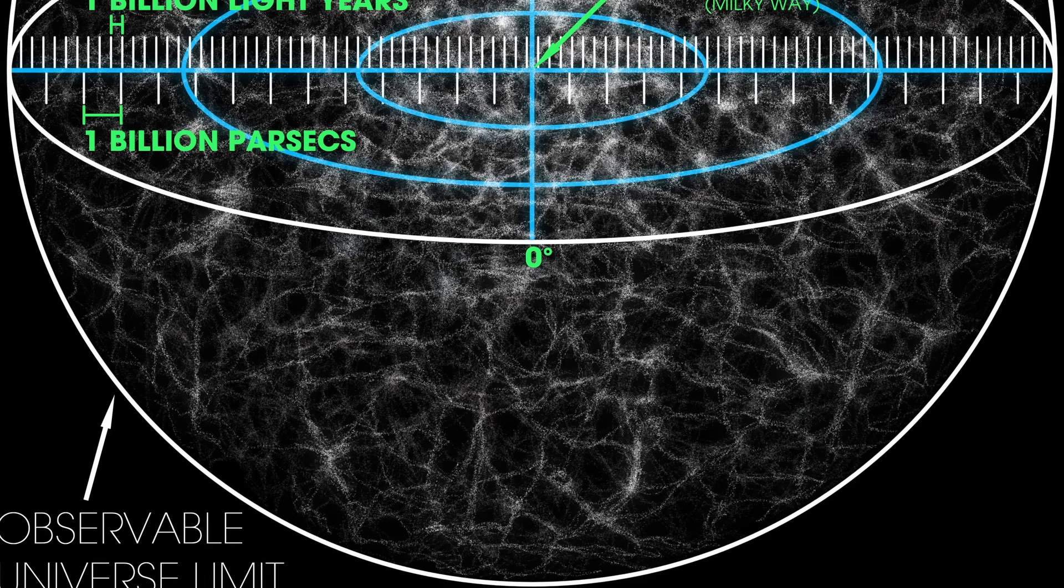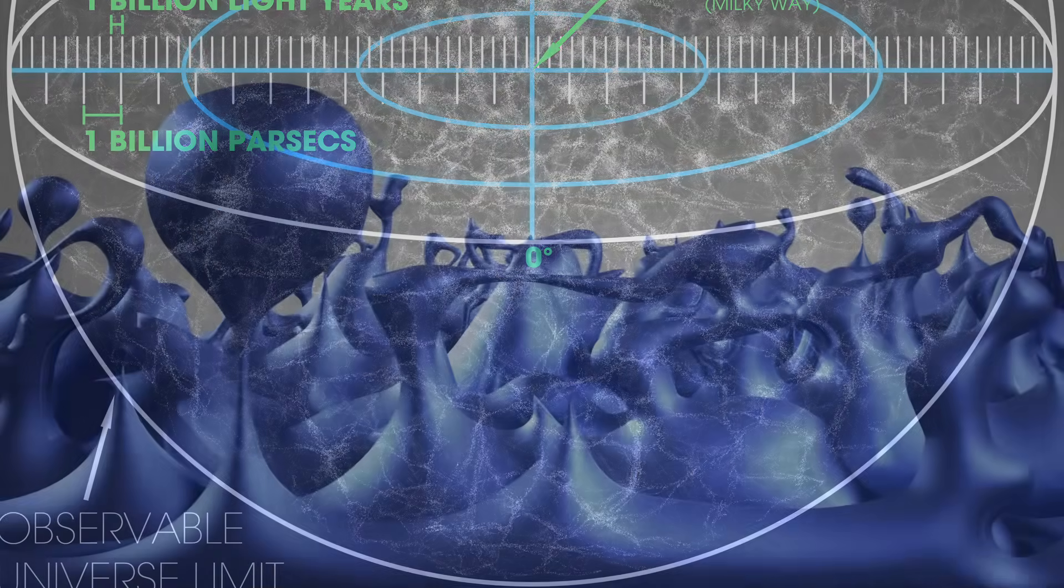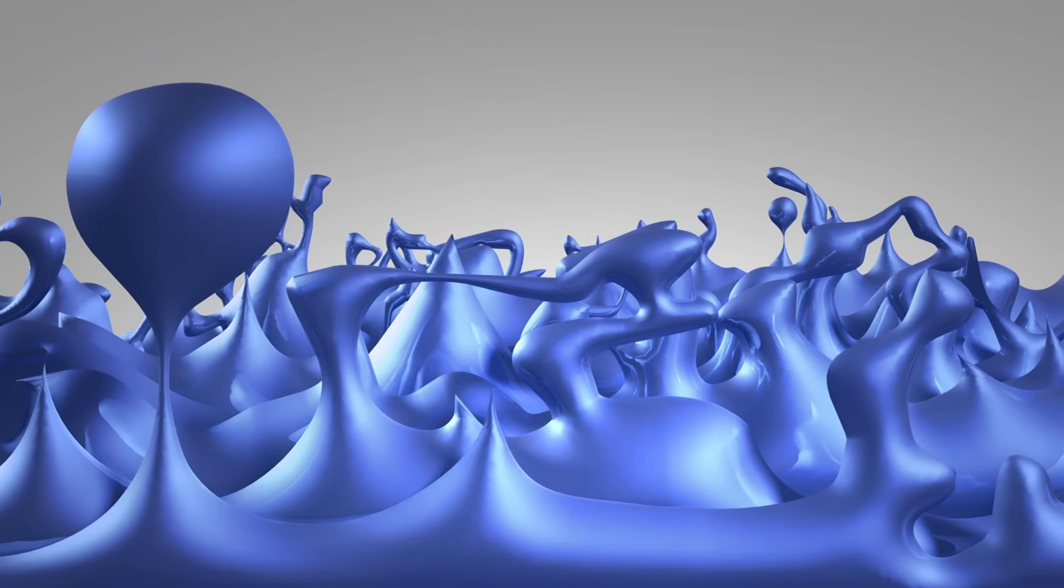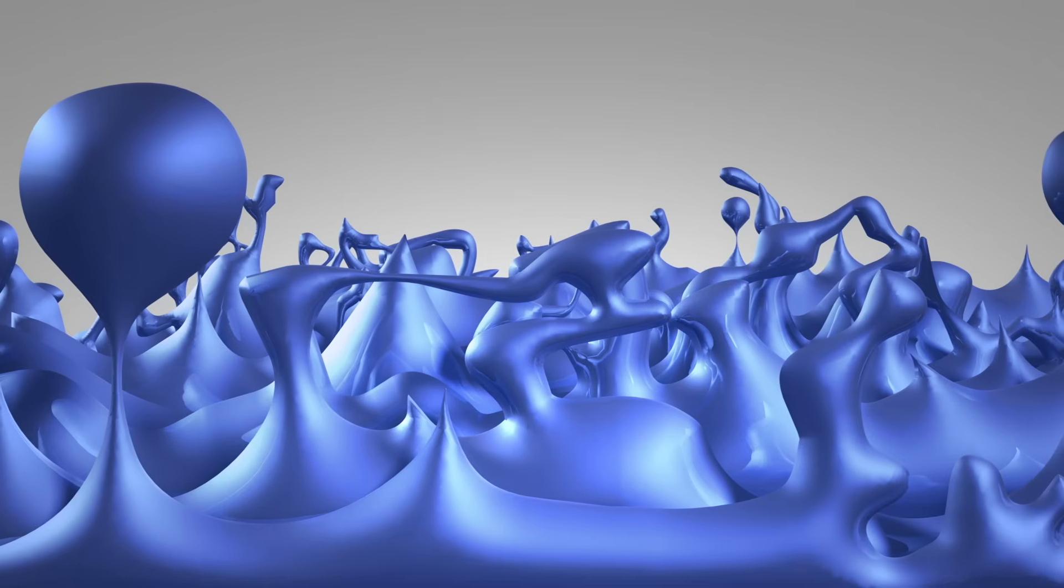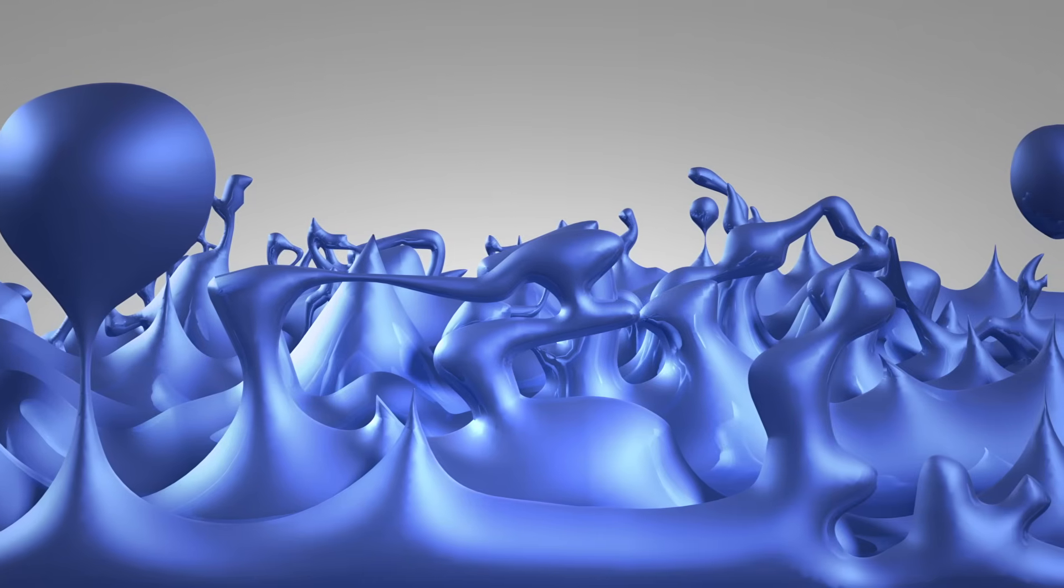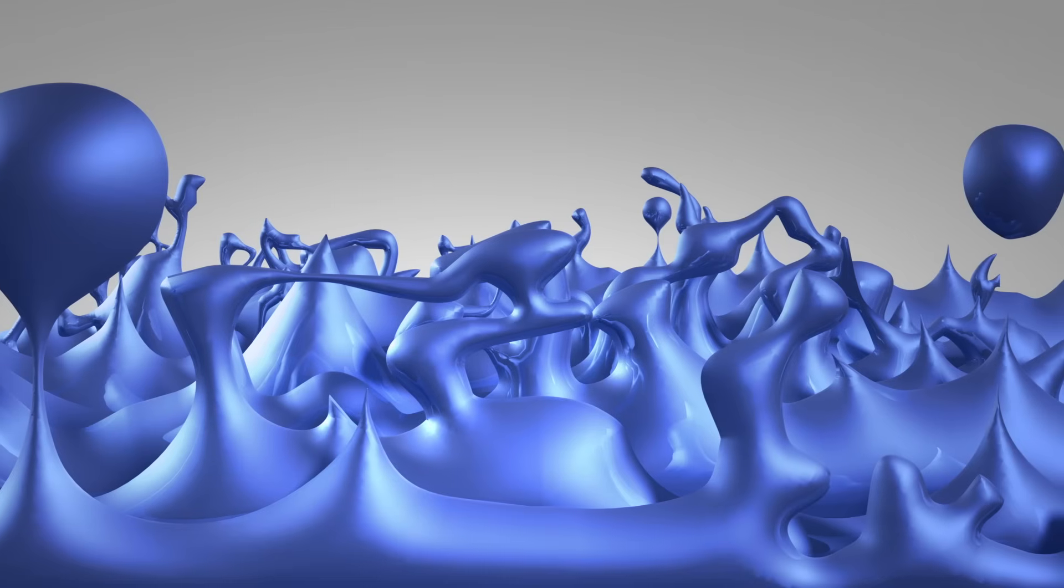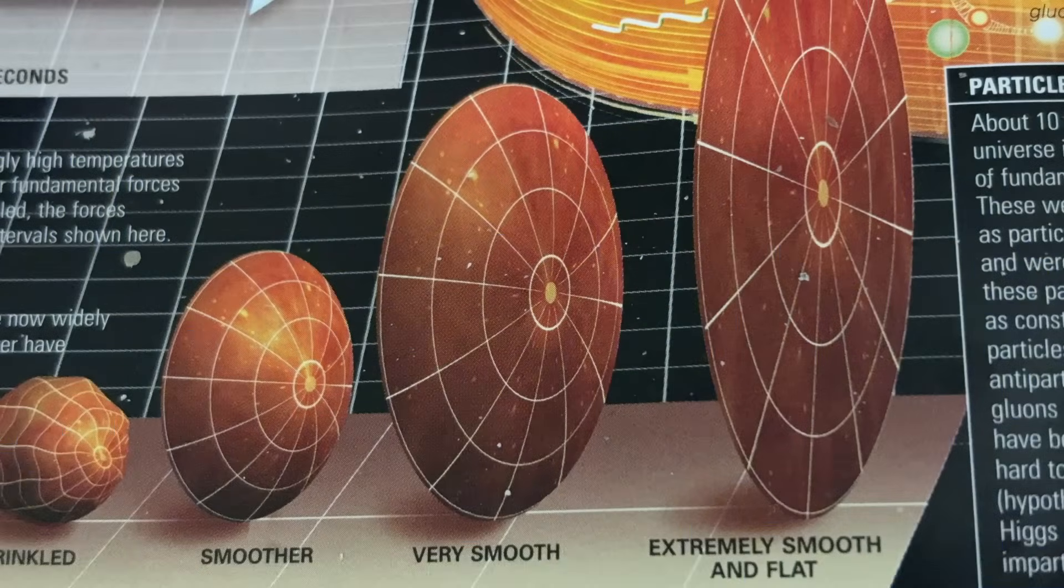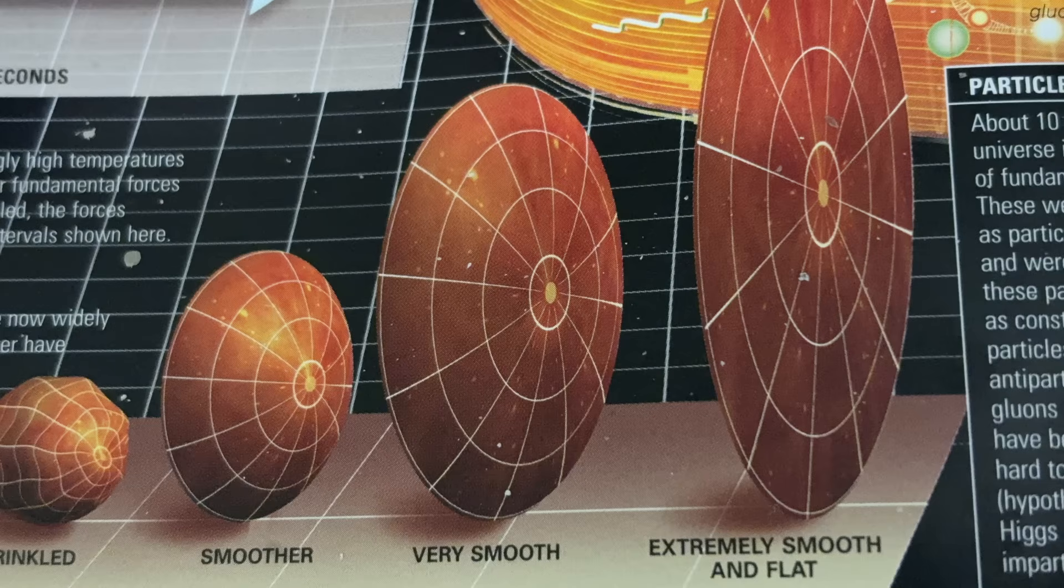Inflation, during the inflation era, rapidly expanded space and stretched quantum fluctuations in the energy fields. Those stretched fluctuations seeded the conditions that allowed particles to form once inflation ended and the universe cooled a bit. Inflation also smoothed out irregularities, and is why the universe is now flat on large scales. However, this does not mean the universe of today is a two-dimensional plane. It means that the geometry of space-time itself is nearly flat, and not curved in any meaningful way.